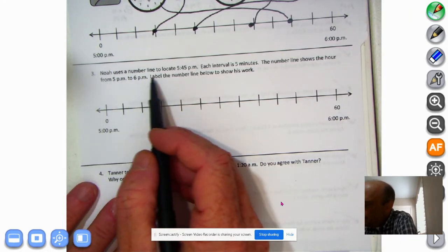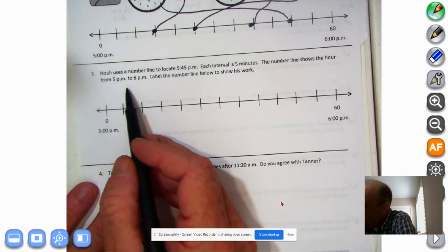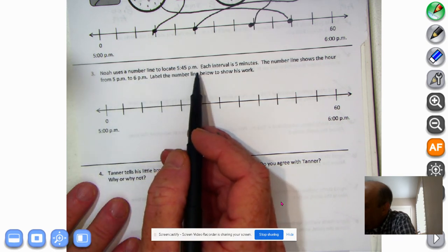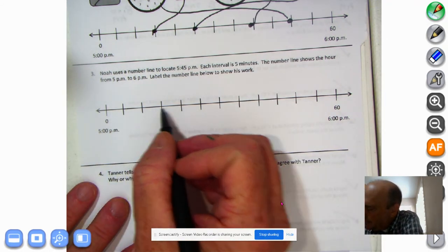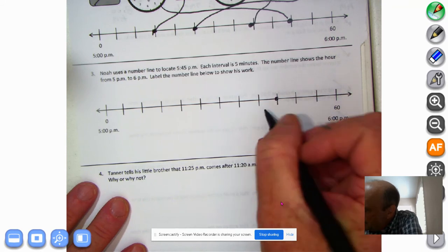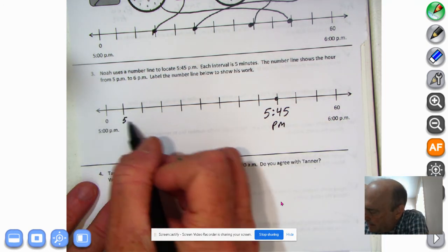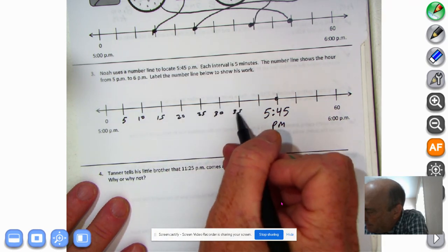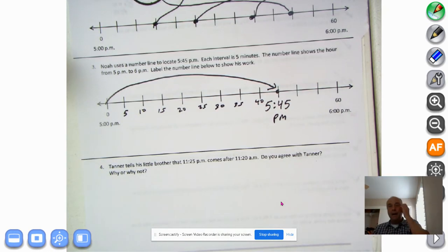All right, let's go with 3. Noah uses a number line to locate 5:45 PM. Each interval is 5 minutes. The number line shows the hour from 5 PM to 6 PM. Label the number line below to show his work. So Noah uses a number line to locate 5:45 PM. Each interval is 5 minutes. Okay, so 5:10, 15, 20, 25, 30, 35, 40, 45. So I'm going to put 5:45 PM. And we can also, if we really want to, we can go like this. 5:10, 15, 20, 25, 30, 35, 40, and 5:45 PM. And a lot of times in Eureka Math, we do these arrows. They go right there. So 5:45 PM.